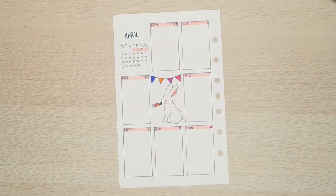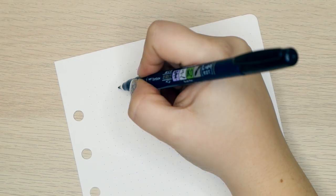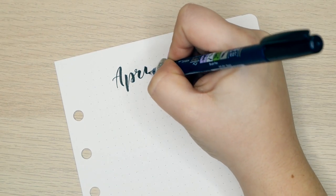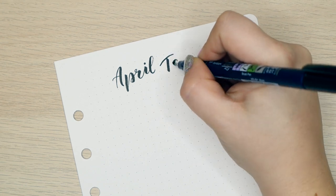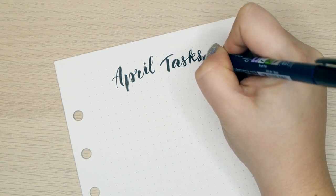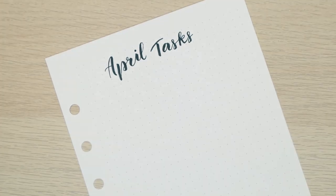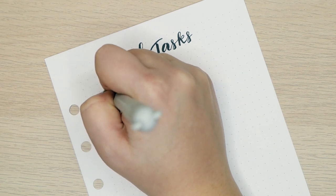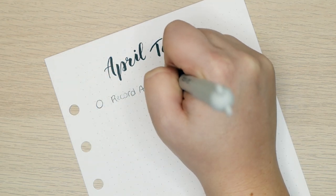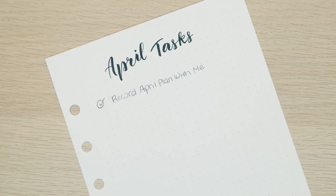I was able to move that list from week to week throughout the month and none of my tasks got lost in the shuffle. So I'm going to continue doing that for the month of April. I have only one-page weeklies and a running task list. And I feel so productive and so on top of things.